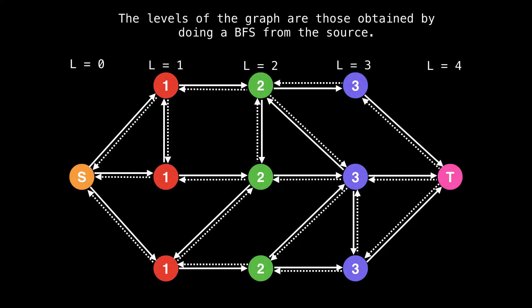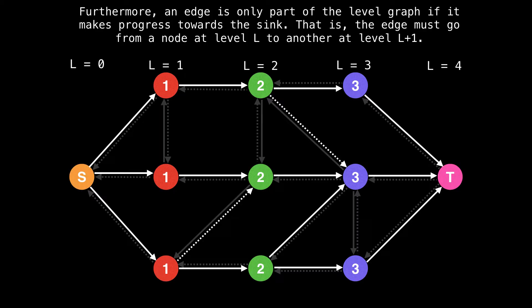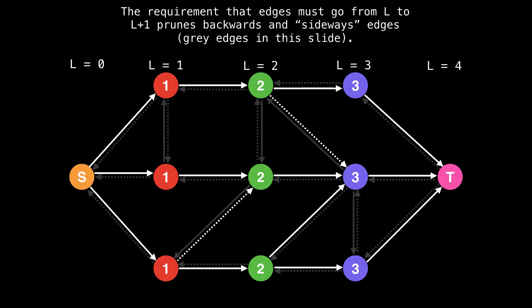The levels of a graph are those obtained by doing a breadth first search from the source. Furthermore, an edge is only part of the level graph if it makes progress towards the sink. That is, an edge must go from a node at level L to another node at level L plus one. The requirement that edges must go from L to L plus one prunes backwards or what I call sideways edges. Those are all the gray edges in the slide.